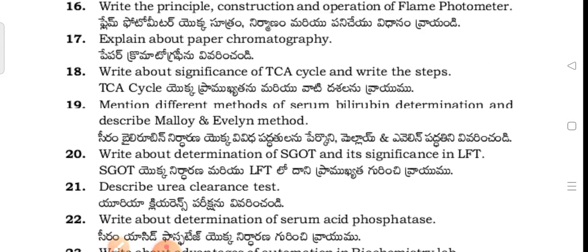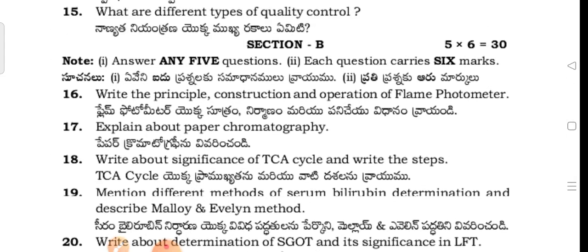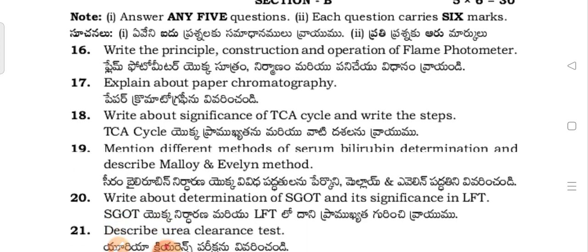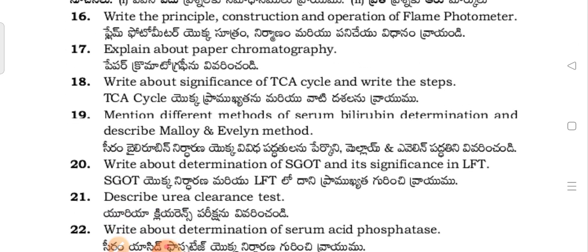Section B questions: Describe the principles and construction operation of a flame photometer. Explain paper chromatography. Describe the significance of the TCA cycle and write the steps.